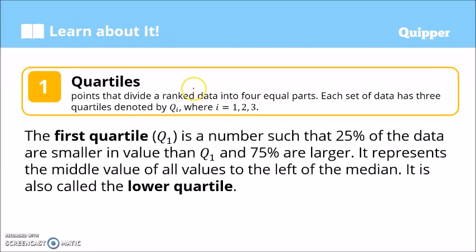Let's recall first what quartiles are. When we say quartiles, these are points that divide a rank data — meaning arranged from lowest to highest. The data set is divided into 4 equal parts. Each set of data has 3 quartiles, denoted by Q sub i, where i stands for 1, 2, and 3. Q sub 1 is the first quartile, meaning 25% of the data are smaller in value than the first quartile and 75% are larger. The first quartile represents the middle value of all the values to the left of the median.